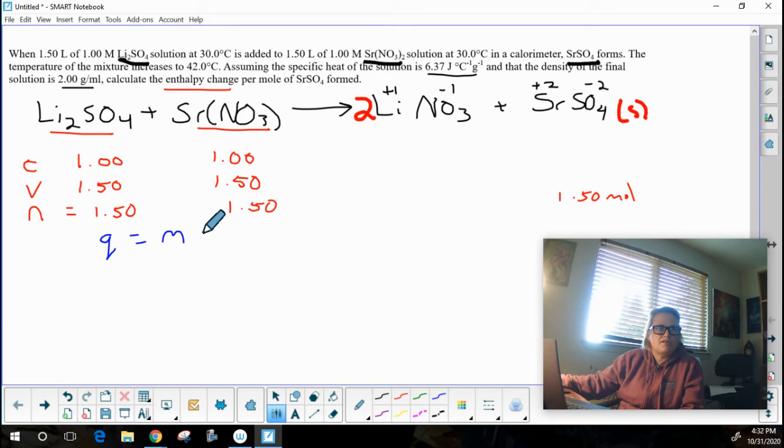Heat released is going to be the mass times the specific heat of the reaction times the change in the temperature.